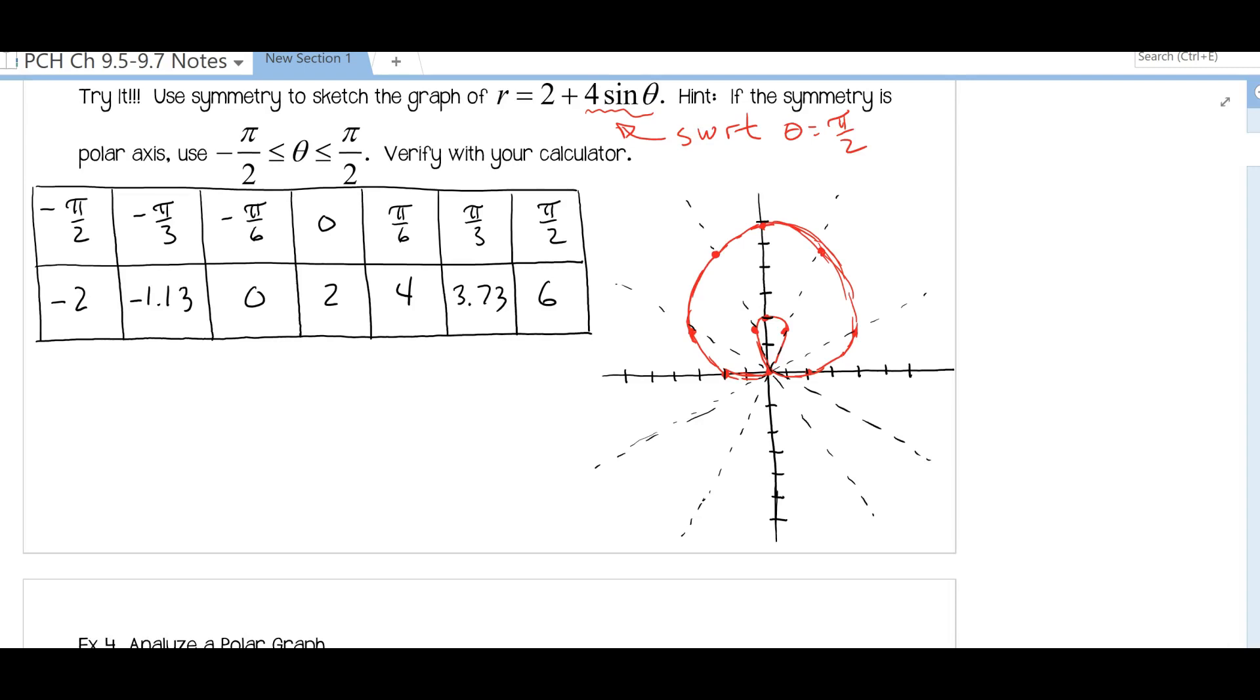Here's the sketch of r equals two plus four sine theta. Notice it's got a sine theta in it, so we know right from the start it's going to be symmetric with respect to theta equals pi over two. Since we plotted the points from negative pi over two to positive pi over two, once we got each of these points all we had to do was reflect it over pi over two to get the other value. So once I got this value over here on the right, I knew I was going to have this value over here on the left. Hopefully your graph looks similar to this. Again, you can check it on your calculator as well.